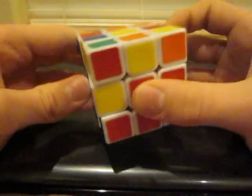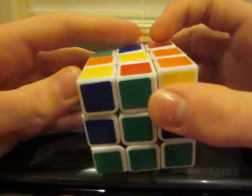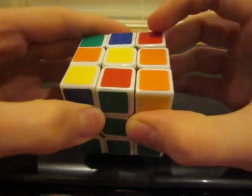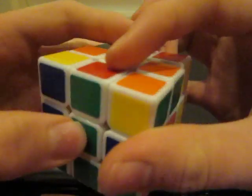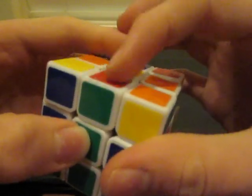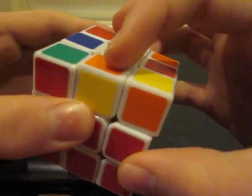So the first step is to look in this top face, right here, this up face, for edge pieces that do not have yellow on them. For example, this one right here is one that we're looking for. It's an edge piece and it doesn't have yellow. This, however, is not what we're looking for because it has yellow on it.